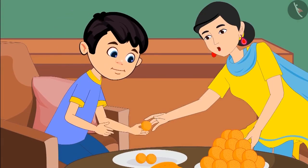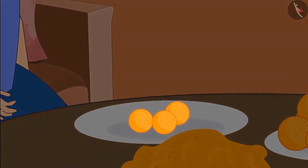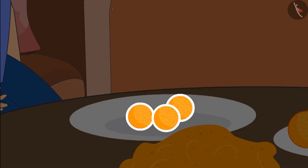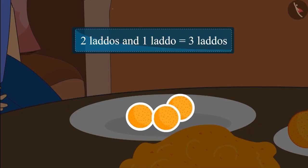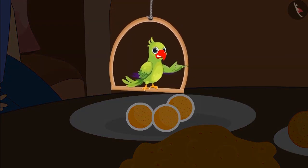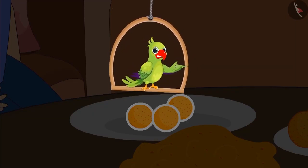Chotu's mother said: here, take this laddoo and keep this also in your plate. Earlier Chotu's plate had two laddoos and then his mother gave him one more laddoo. Adding one laddoo to two laddoos makes three laddoos — the plate now has three laddoos. Very good children, you counted the laddoos correctly!